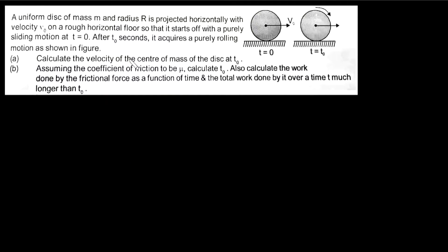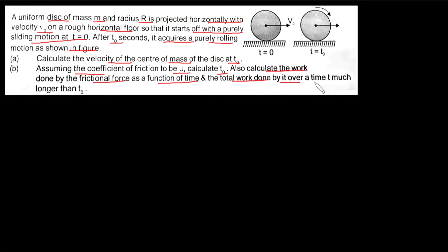Hello everyone. In this video I will be solving this question. A uniform disc of mass m and radius r is projected horizontally with velocity v naught on a rough horizontal floor, so that it starts off with purely sliding motion at t = 0. After t naught seconds it acquires purely rolling motion as shown in the figure. We need to find the velocity of the center of mass at t naught, calculate t naught, and also calculate the work done by the frictional force as a function of time and the total work done over time t much longer than t naught.